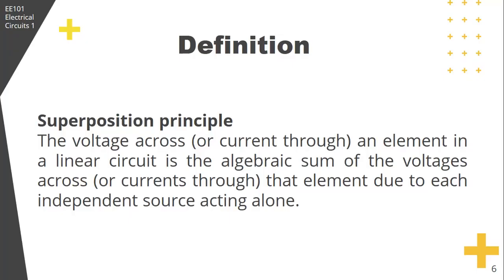If a circuit has two or more independent sources, one way to determine the value of a specific variable — that is our voltage or circuit current — is to use nodal or mesh analysis, which we learned in chapter three. Another way is to determine the contribution of each independent source to the variable and then add them up. This is known as superposition.